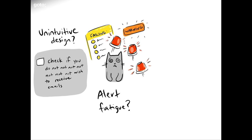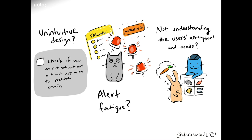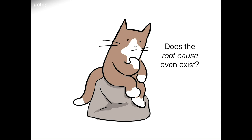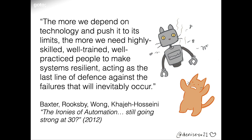What was the human who made the mistake misled by — design that was really unintuitive? Maybe they were frazzled because they got so many alerts that were unactionable. Maybe the control plane wasn't designed to accommodate the assumptions they would bring into the control room. The latest thinking around resilience engineering suggests there are perhaps no root causes at all. One of the best talks on this is by Ryan Kitchens from Netflix. The more we depend on technology and push it to its limits, the more we need highly skilled, well-trained, well-practiced people to make systems resilient — because people act as the last line of defense against the failures that will inevitably occur.